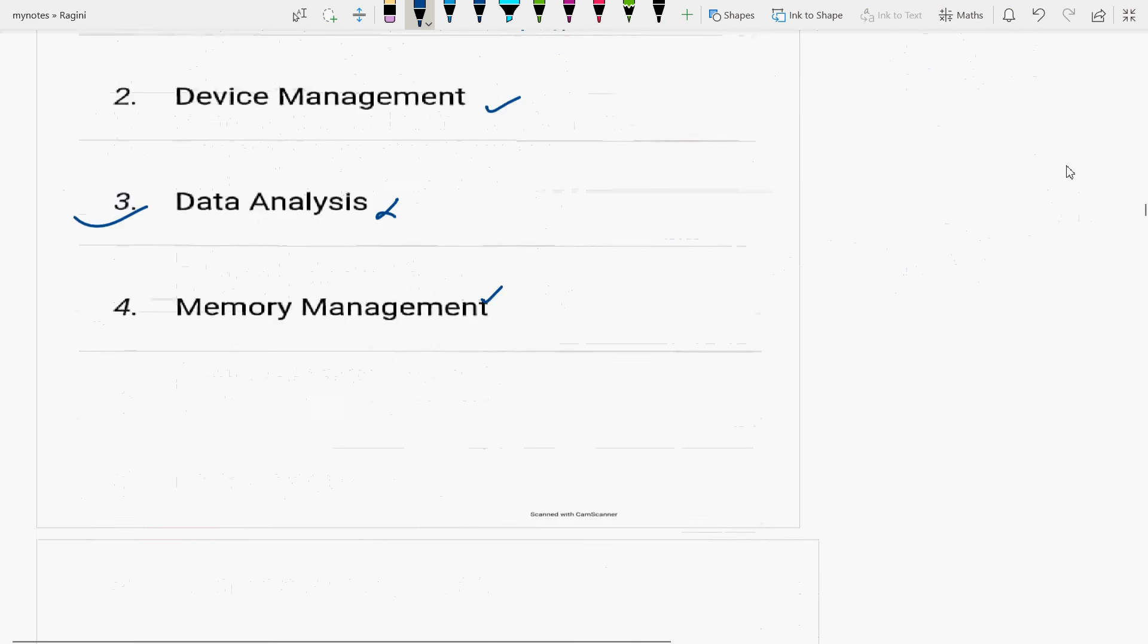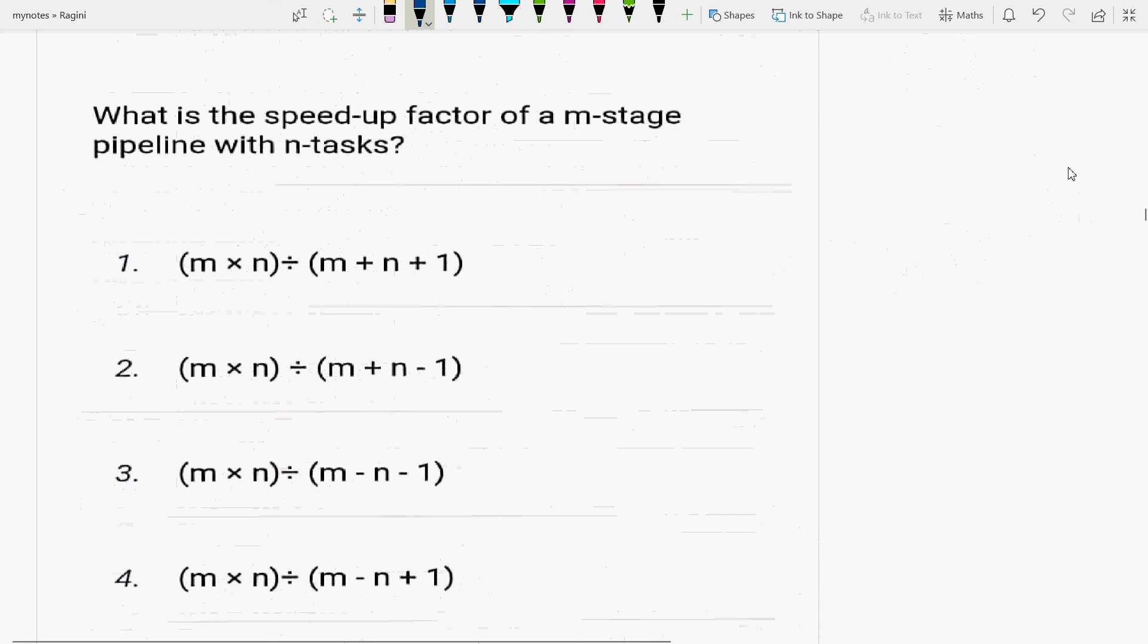Next question: what is the speed up factor of an M stage pipeline with N tasks? The right formula is M multiplied by N divided by N plus M minus 1. What is being asked is the speed up factor. The formula is time taken TWP divided by TP.